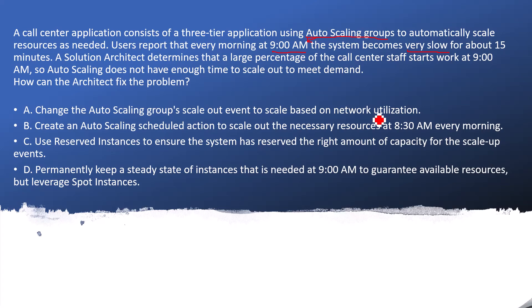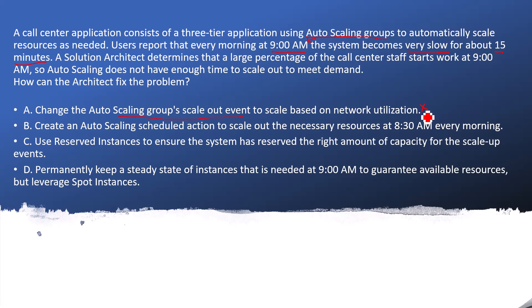That could seem like a correct answer, but here's the problem: if at 9 a.m. your auto-scaling group tries to scale out, it requires some time to warm up the new EC2 instances and map them with the load balancer. You only have a 15-minute window, and even with scale-out, attaching and warming up EC2 instances and configuring with the Elastic Load Balancer takes time. Users will still experience latency in the initial 10 to 15 minutes, so I'll mark this as wrong.